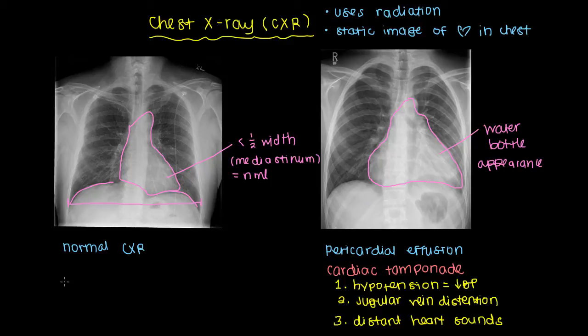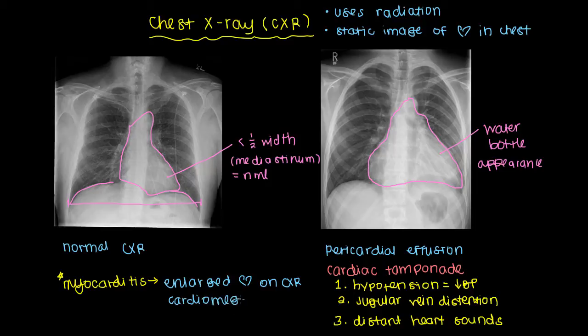For myocarditis on the other hand, myocarditis would appear with an enlarged heart on chest x-ray. You might hear this term cardiomegaly. That goes back to this rule I talked about above. Cardiomegaly just means big heart. Megaly, mega means larger. Cardio means heart. So if it's bigger than half of the mediastinum, then we've got cardiomegaly. It's sort of a nonspecific thing because we'll see cardiomegaly with other things as well, not just myocarditis. But this is what you would look for on a chest x-ray if you're suspecting myocarditis.